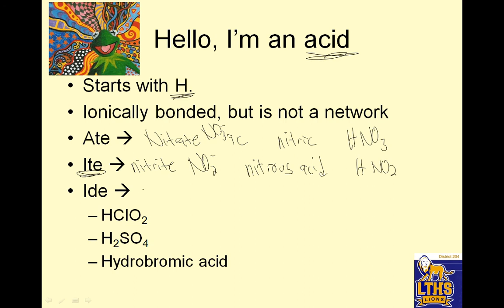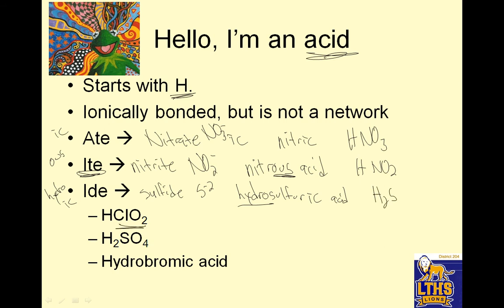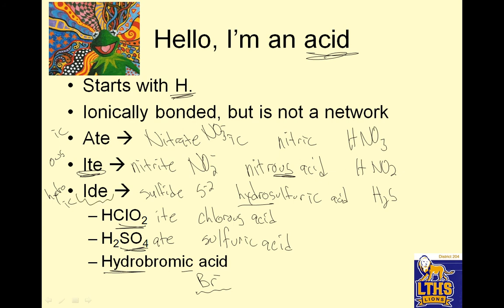For '-ide', like sulfide which is S negative 2, '-ide' becomes 'hydro-' plus '-ic acid.' So the stem gives you hydrosulfuric acid, and that would be H₂S. HClO₂ — ClO₂ is chlorite, so '-ite' means '-ous,' so it is chlorous acid. SO₄ negative 2 is sulfate; '-ic, I ate it' — the stem for sulfur gives you sulfuric acid. Hydrobromic acid: I hear 'hydro,' so it comes from bromide. If it ends in '-ide,' it's just your charge from the periodic table. Hydrobromic acid is HBr.